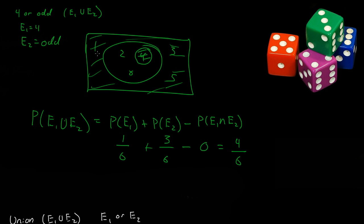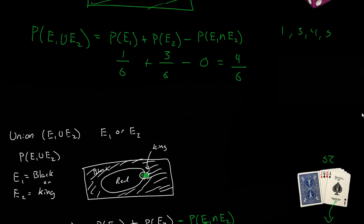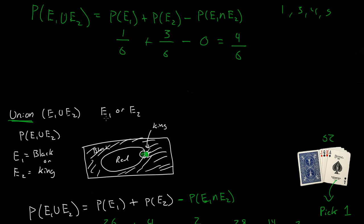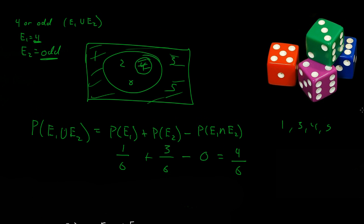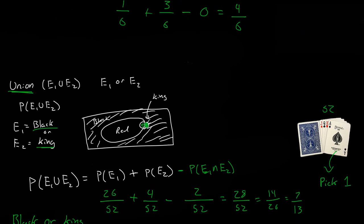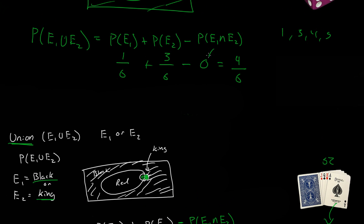Does that make sense? We can get a one, a three, a four, and a five — that's four sides out of six. So 4 out of 6 makes sense. To recap: a union means 'or.' You add the probabilities up and subtract their intersection. The intersection might be zero if the events can never occur together.